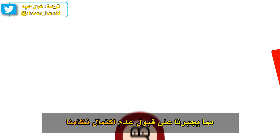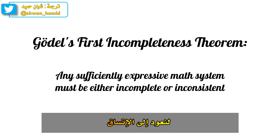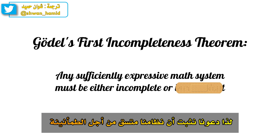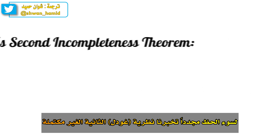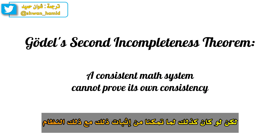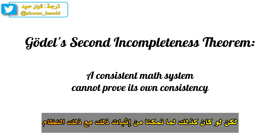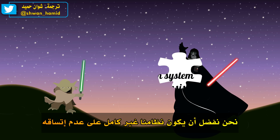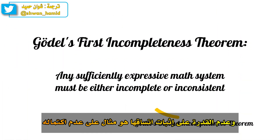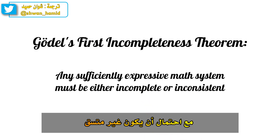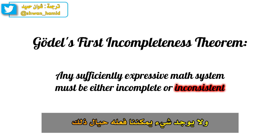Forced to accept the incompleteness of our system, let's turn back to consistency. We would like to patch that hole at least, so let's prove that our system is consistent for peace of mind. Unfortunately, Gödel's second incompleteness theorem tells us that a consistent math system cannot prove its own consistency. We really need our system to be consistent, but if it were, we'd never be able to prove it with that system. We'd prefer our system to be incomplete over inconsistent, and being unable to prove its consistency is an example of its incompleteness. So we'll have to work in a math system with the lingering possibility that it might be inconsistent, and there's nothing we can do about it.